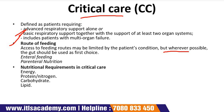Parenteral nutrition can play an invaluable role where enteral feeding is not possible. Avoidance of overfeeding is important, and maintaining good glycemic control — that is, stable blood glucose levels — is associated with lower mortality. Additional insulin may be required to achieve this.